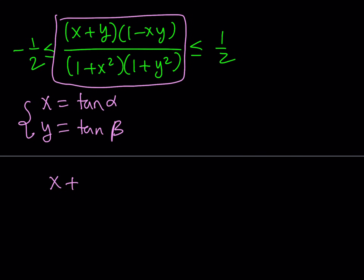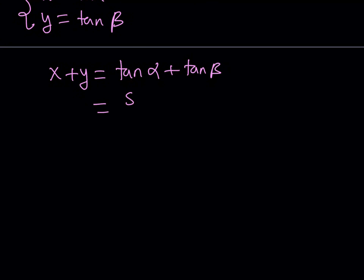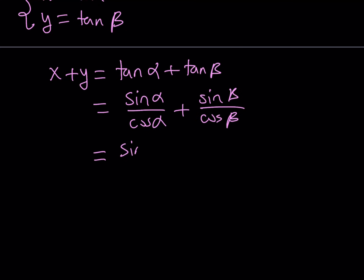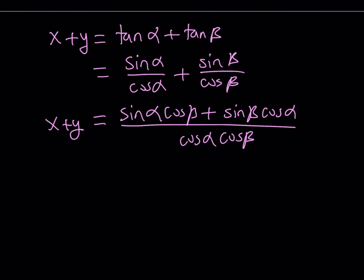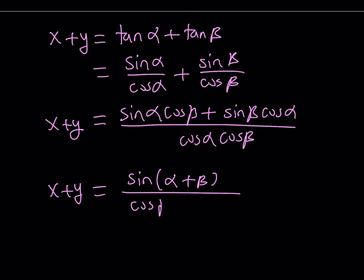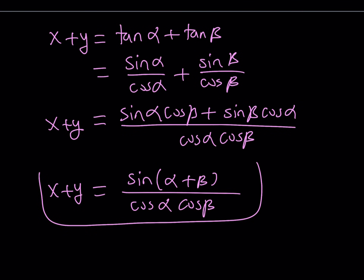Let's see what happens to each piece. Starting with x plus y: x plus y can be written as tangent alpha plus tangent beta, which is sine alpha over cosine alpha plus sine beta over cosine beta. Making a common denominator, we get sine alpha cosine beta plus sine beta cosine alpha, all over cosine alpha cosine beta. The numerator can be written as the sine of a sum — sine of alpha plus beta — using the sum and difference formulas. So x plus y equals sine(α+β) divided by cosine alpha times cosine beta.